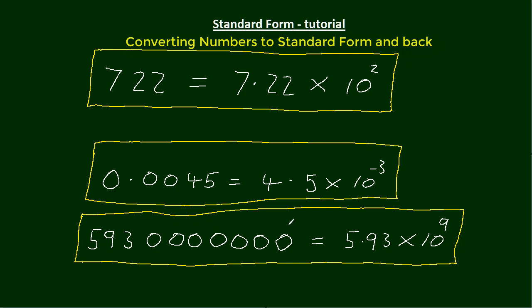Obviously it'd be very easy to miss off a zero here, so writing it in standard form we get 5.93 times 10 to the 9. So let's look at how we convert numbers into standard form and then back again.